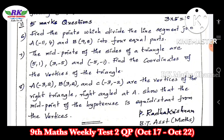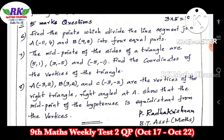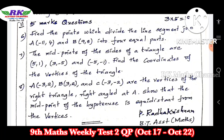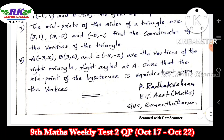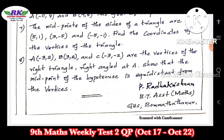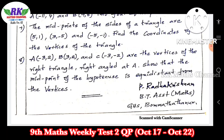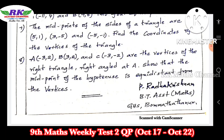Question number seven: the midpoints of the sides of a triangle are given — find the coordinates of the vertices of the triangle. This is an important example problem. Given the midpoints of a triangle, we work backwards to find the vertices. Question number eight involves a proof-based problem.